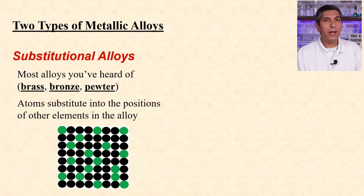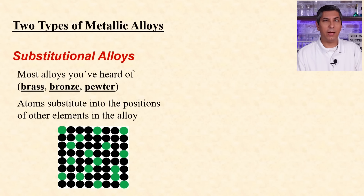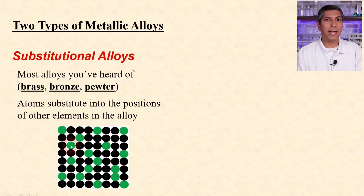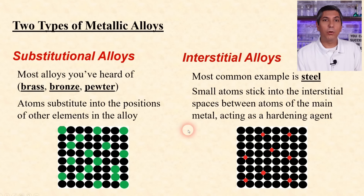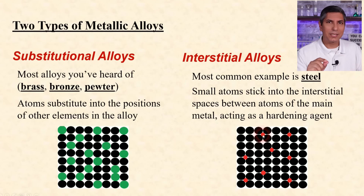Different elements can combine with metals to form alloys. Substitutional alloys — like bronze, brass, or pewter — are where atoms of one element substitute into positions of some of the atoms of the primary metal. In brass, zinc atoms substitute into positions where some of the copper atoms are. Some alloys have much smaller atoms that stick themselves into the spaces between the larger metal atoms — these are called interstitial alloys. Steel is a great example: little carbon atoms stick themselves into the interstitial spaces between the iron atoms.